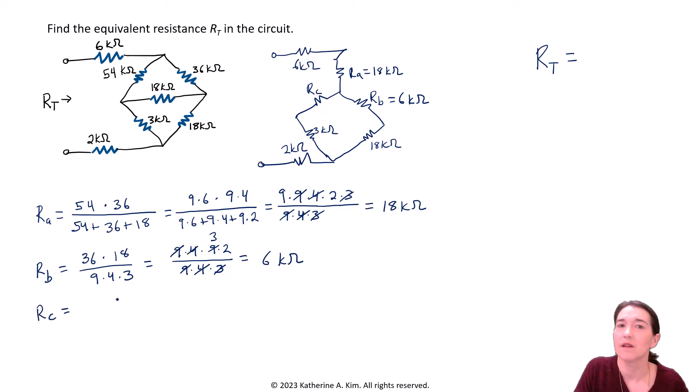All right, last one, RC. We do the same thing again. So we look at this node here, which is the equivalent to this one over here. In the delta configuration, it's connected to the 54 and 18. So those are going to be multiplied together. 54 times 18 divided by the sum of the 3 together, which we've already calculated. So I'm just going to write the factored version here. And we can factor these again. So 9 times 6 times 9 times 2. So we can get rid of some things in here. This is all going to be 12. So we'll end up with just 9 kilo-ohms here. All right, now we have these values for each of them.